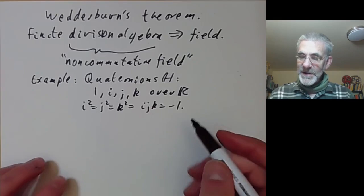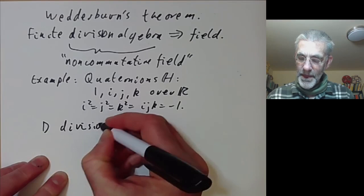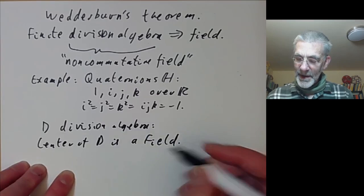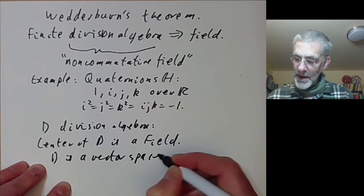Now if you've got a division algebra, suppose D is a division algebra, we can look at the center of D, and this is obviously a field. So D is a vector space over F.